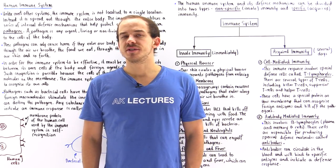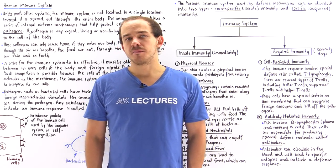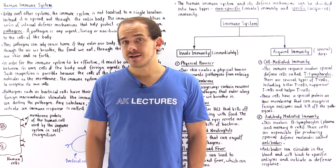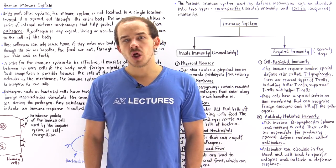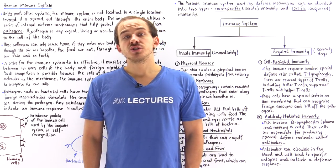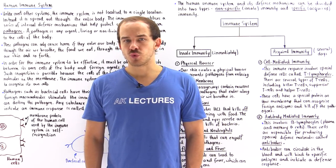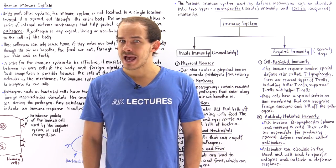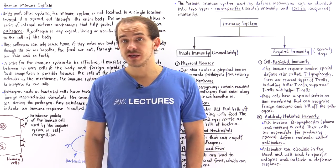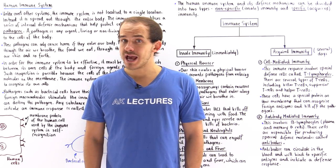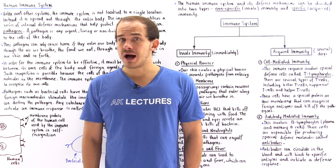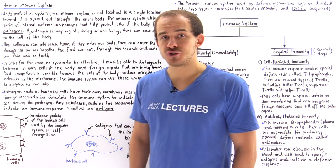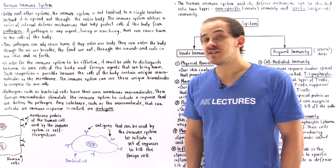Unlike most other systems of our body, the immune system is special because it is not localized to a specific region or a specific organ of the body. Instead, our immune system is spread out throughout the entire body. It is found in many different regions of the body.